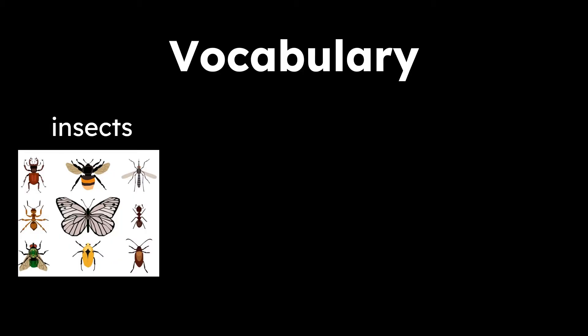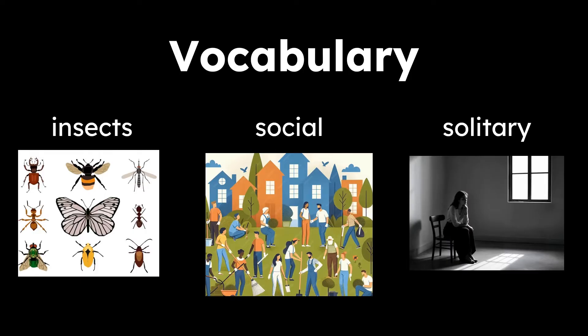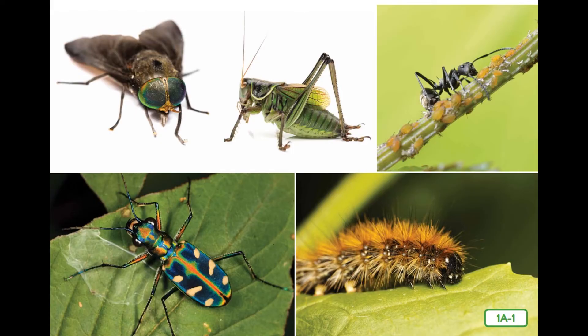Here are some vocabulary words in our read aloud today. The first word is insects: small animals with six legs and three main body parts. The next word is social: living together in organized communities. And the last word is solitary: living alone or in pairs.